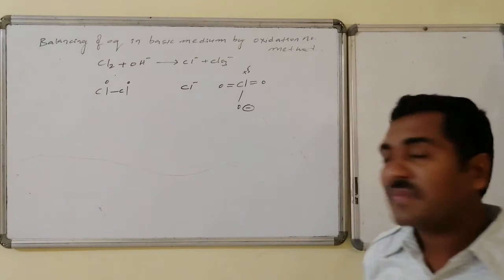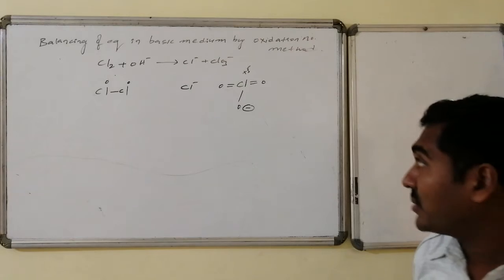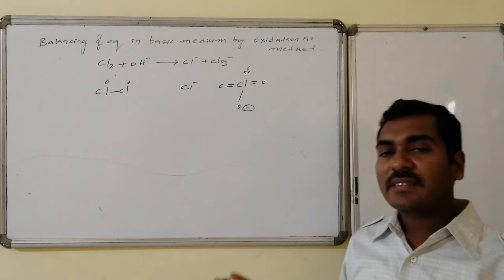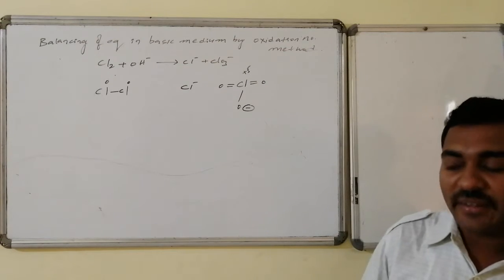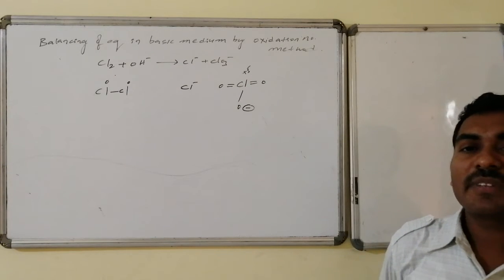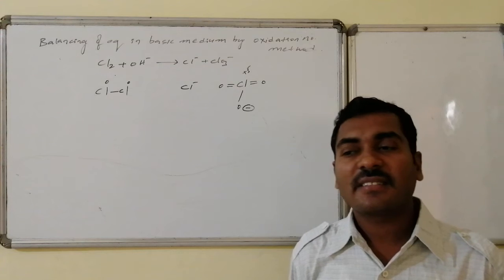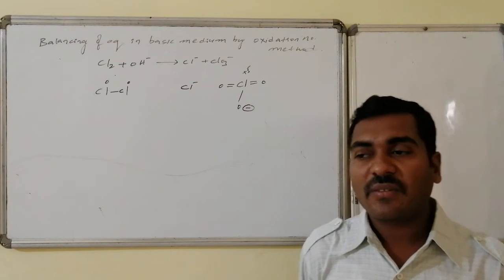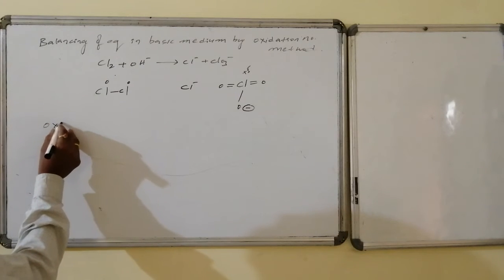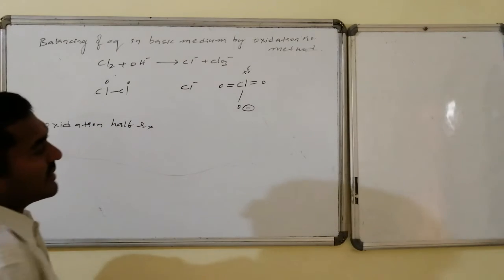These are the oxidation states of the reactants as well as the products. Now the oxidizing agent and reducing agent must be identified, hence the oxidation half reaction and the reduction half reaction should be separated. Zero converted to plus five is oxidation, and zero converted to minus one is reduction.